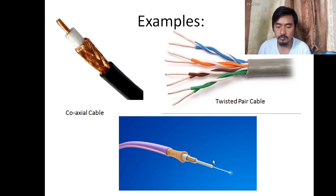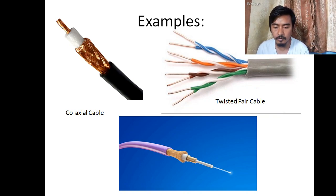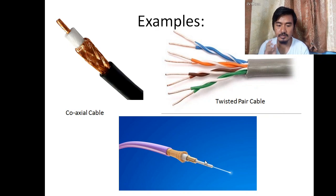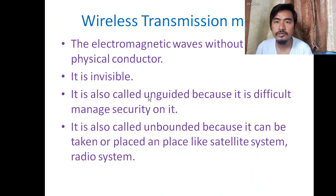Examples of wired transmission media include coaxial cable, fiber optic cable, and twisted pair cable. Fiber optic cable is the most secure and most reliable cable available, and it uses light rather than electricity to transmit data.